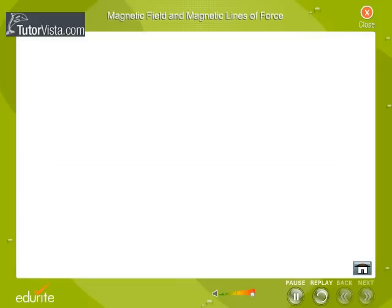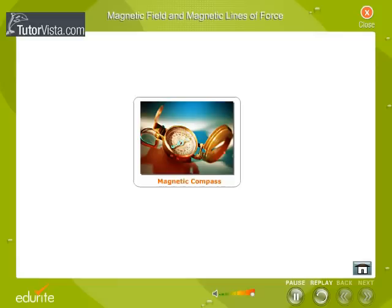Let us now map the magnetic field by using a compass. A compass is a small magnetic needle pivoted at its center and enclosed in a brass case with a glass top.